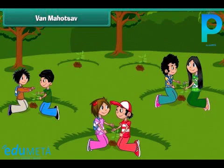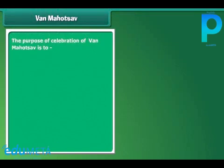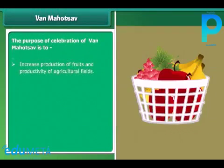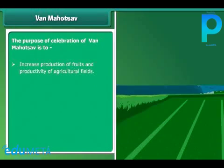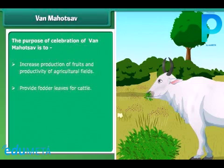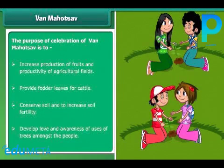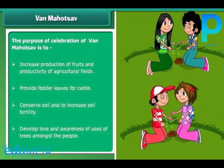Now let's know about Van Mahotsav. Van Mahotsav is a tree planting festival celebrated in the month of July every year. We celebrate Van Mahotsav to increase production of fruits and productivity of agricultural fields, provide fodder and leaves for cattle, conserve soil, increase the fertility of the soil, and generate love and awareness of the uses of trees among the people.